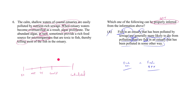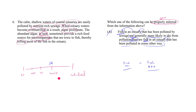Where would you put A on the spectrum? It doesn't contradict the information, because nothing in the stimulus lets us compare sewage pollution to any other kind. But it's also not supported by the passage at all. So A is merely consistent with information that could be true or could be false.